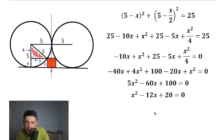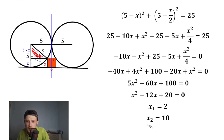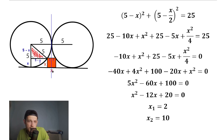We can easily find the roots x₁ and x₂ using Vieta's theorem or the discriminant — whichever you prefer. We get two roots: 2 and 10. If you look closely, x equals 10 is not valid for us, because 5 minus 10 gives a negative value, which is not acceptable in geometry. So we cancel x equals 10, and in our case x equals 2.